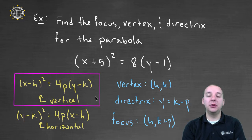So if that's the case, then we should also remember the vertex is at the point (h, k). The directrix is at the line y = k - p. And the focus is the point (h, k + p).